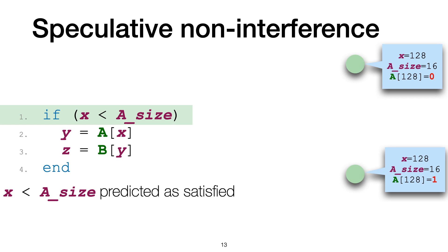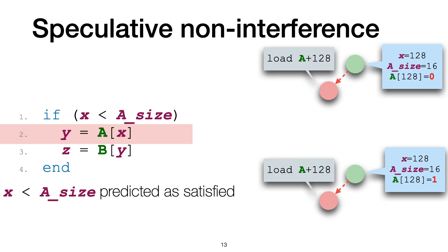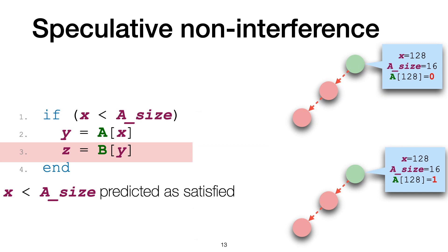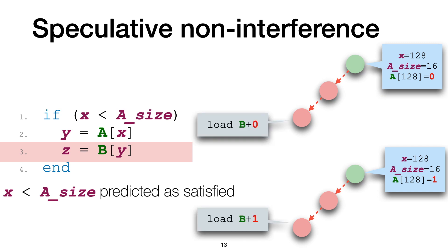Let's look again at the Spectre V1 snippet. Consider two initial configurations where x is 128, the size of a is 16, and a of 128 is zero in one case and one in the other. Assume that the oracle predicts the condition as satisfied in both cases. In both executions we start the speculative transaction and execute the memory accesses. The first memory access produces the same observations in the two executions. However, the second memory access results in different observations: in one case the attacker observes a load from address b plus zero, while in the other the attacker observes a load from b plus one. Since these two executions have the same non-speculative behavior, these different observations result in a violation of speculative non-interference. So the Spectre V1 snippet is not speculatively non-interferent.